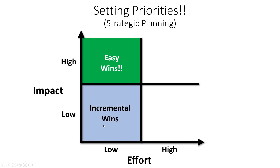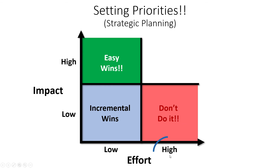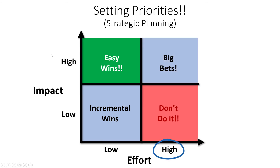The next category in the bottom left I would call incremental wins — it's low effort but also low impact. It's not going to be a home run, but it's going to move the business forward in a small, meaningful way. The third quadrant in the bottom right is what I would call the don't-do-it quadrant. If a project requires a lot of effort but doesn't have a big impact, you shouldn't be doing it because you're not getting the return on investment you should be looking for. In the top right, I call these big bets — high effort but high impact. These are projects that are really going to move your organization forward in a big way, but they require a lot of effort, so if they don't pay off, you've invested a lot of resources.